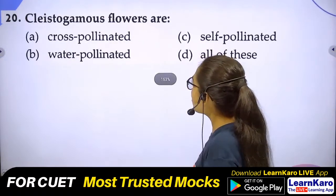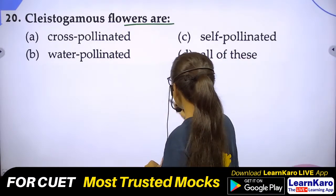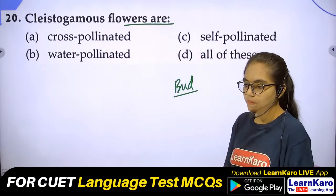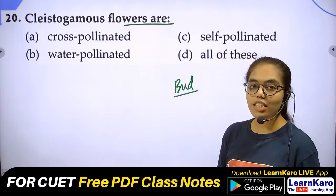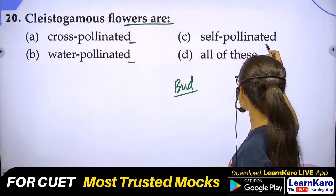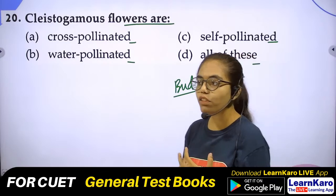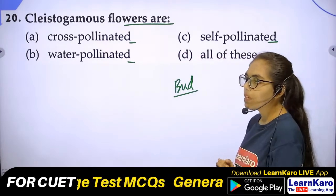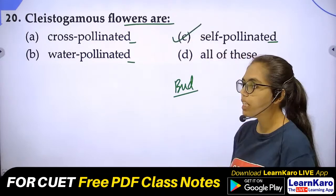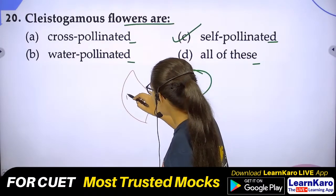Question 20: Cleistogamous flowers — which type of pollination do they undergo? Cleistogamous flowers never open (remain in bud stage). Since the flower never opens, pollen cannot travel elsewhere. Options: cross-pollination, water pollinated, self-pollinated, or all of these. Correct answer is self-pollination — the flower pollinates itself without ever opening.